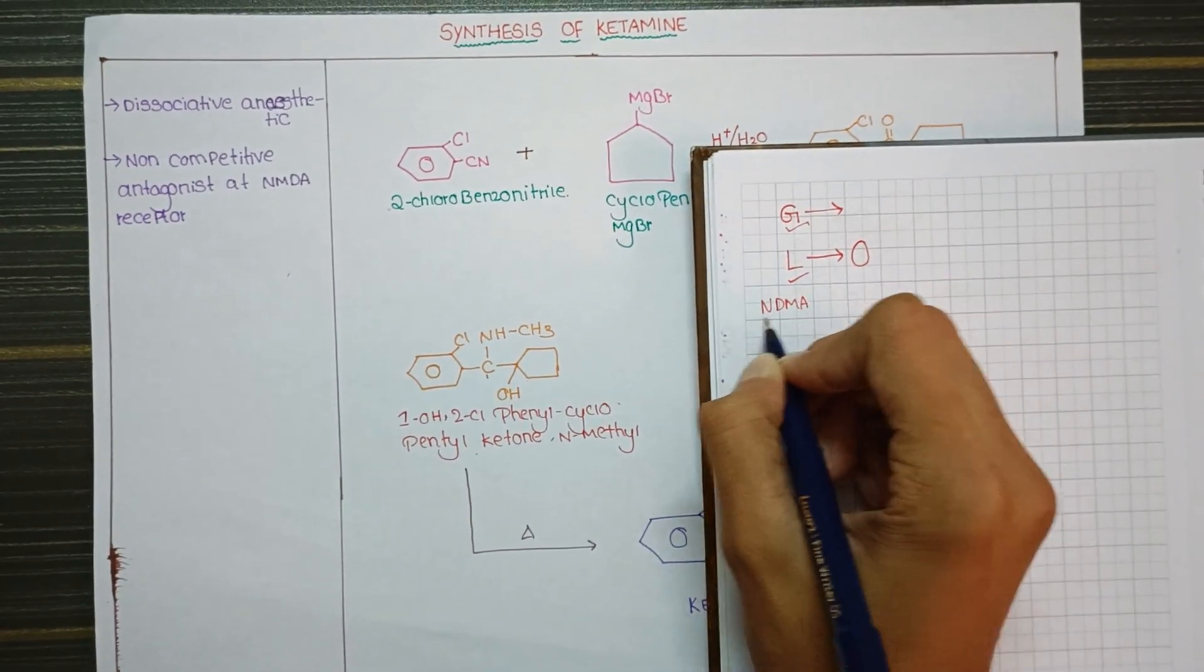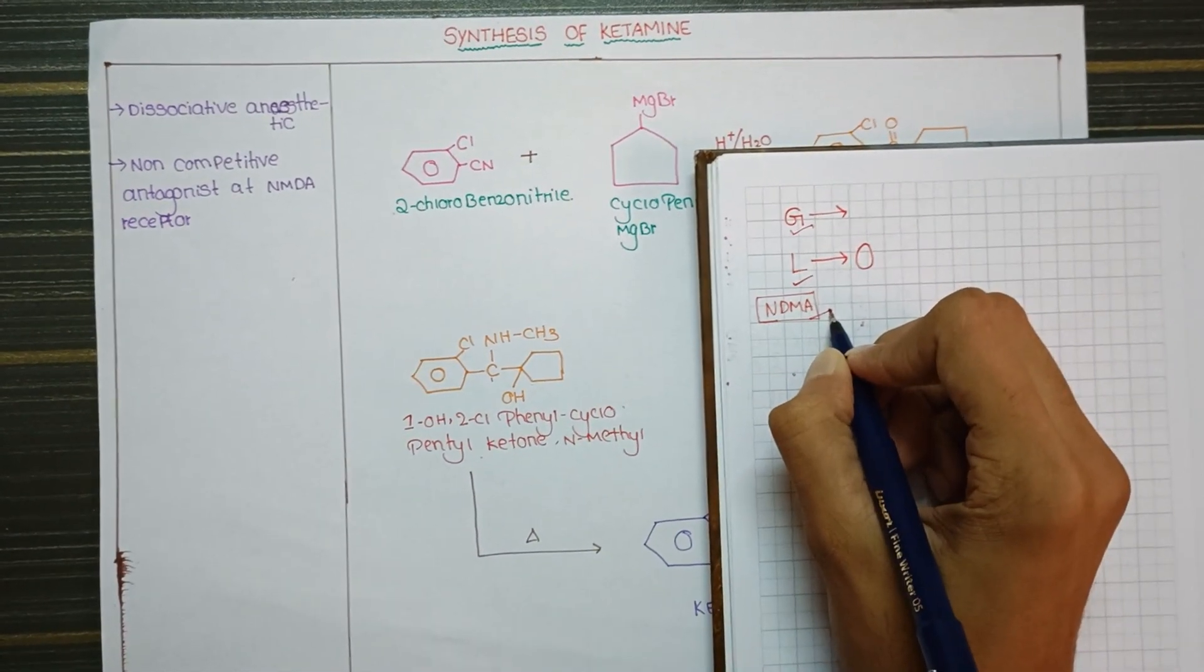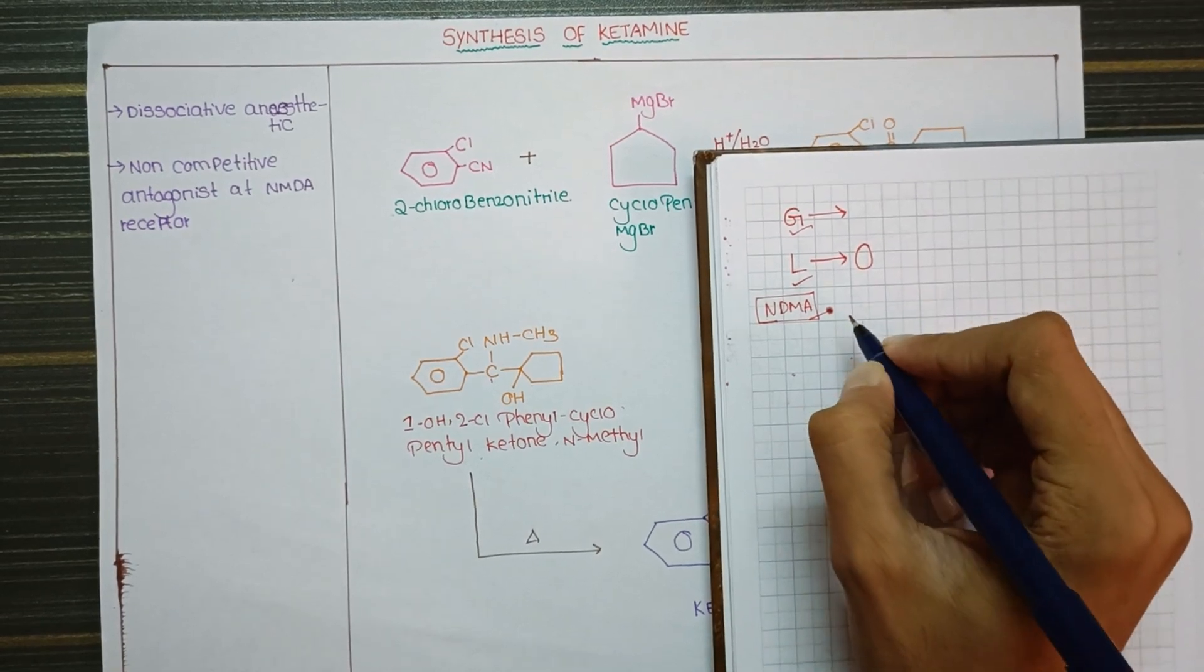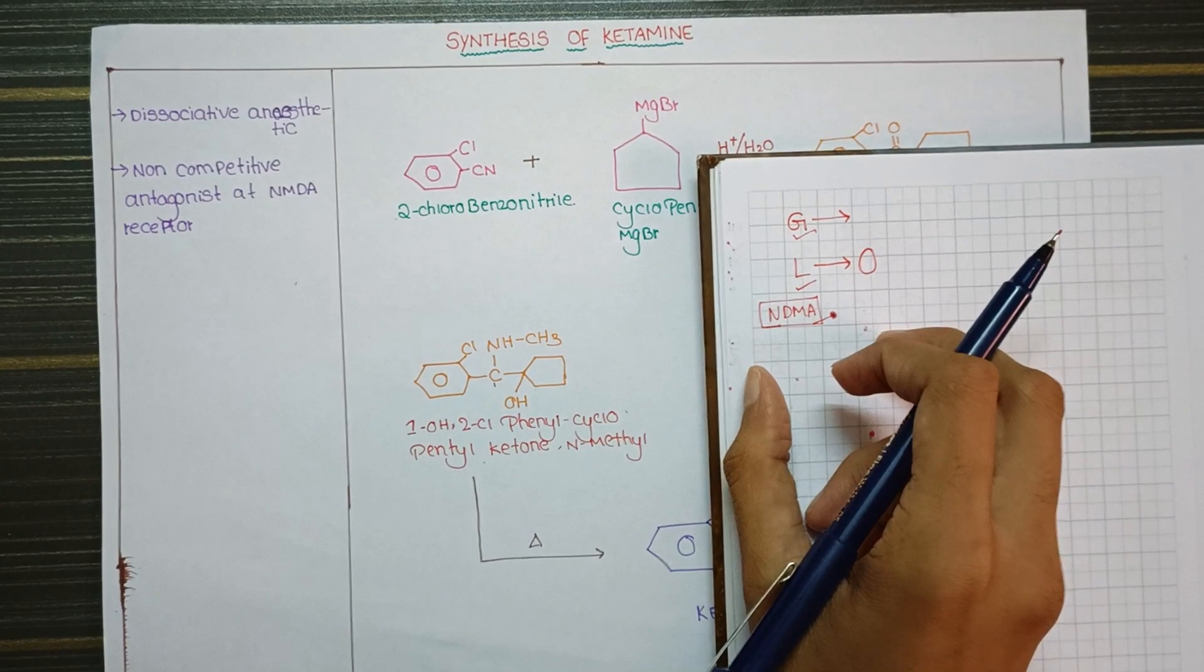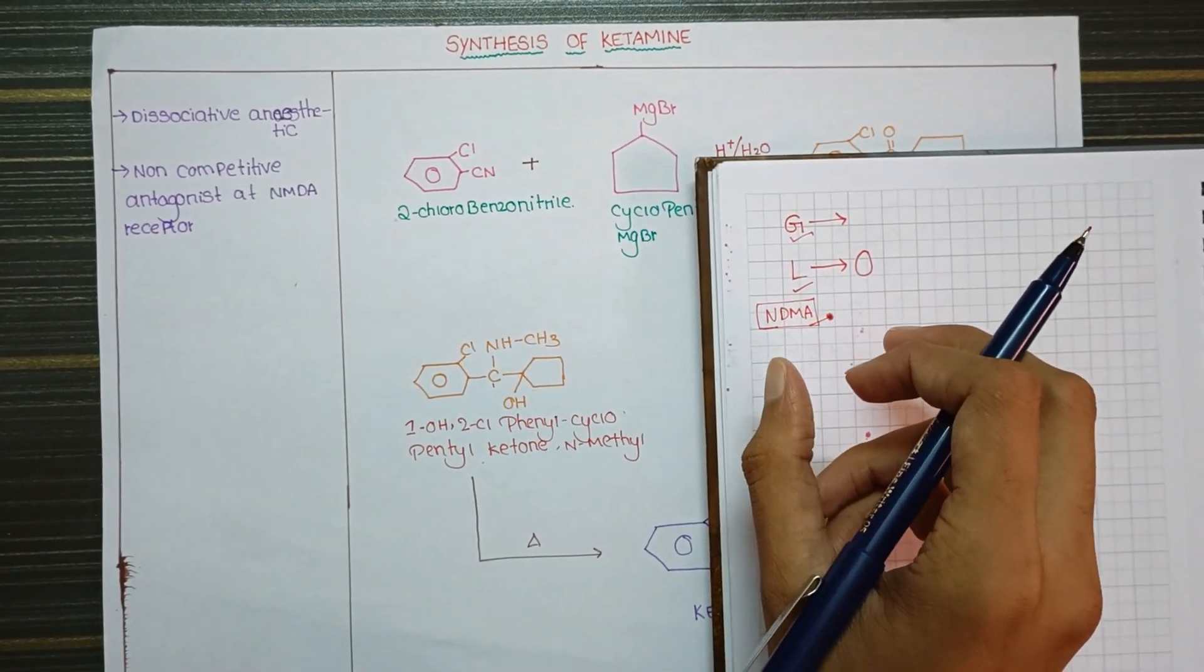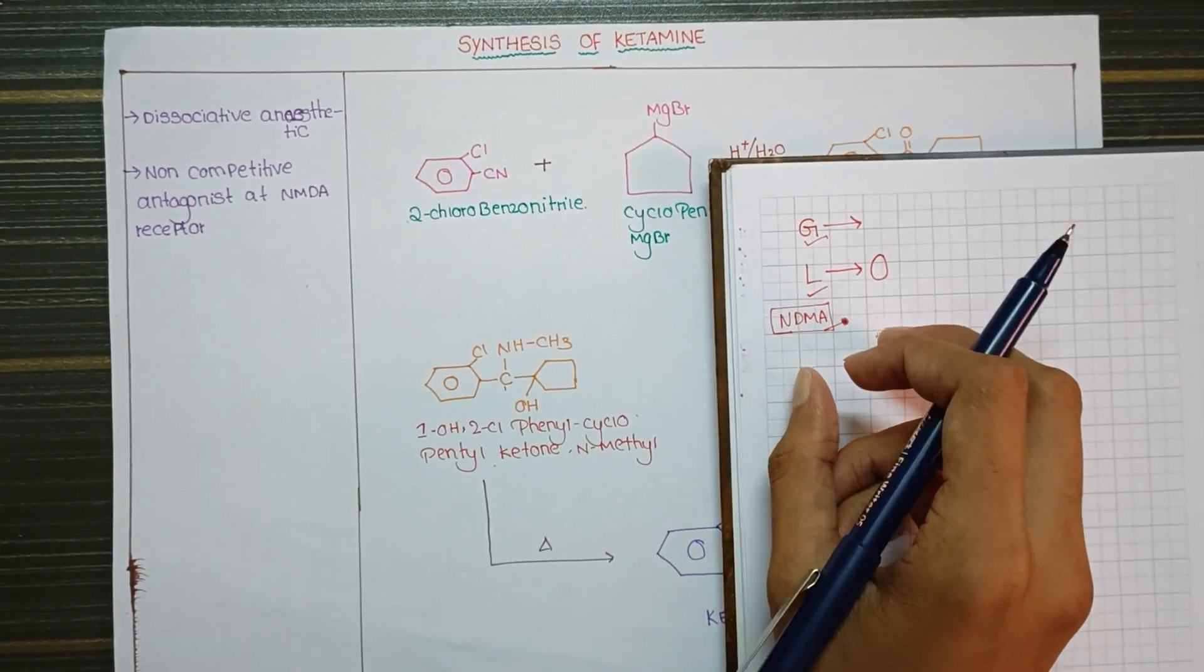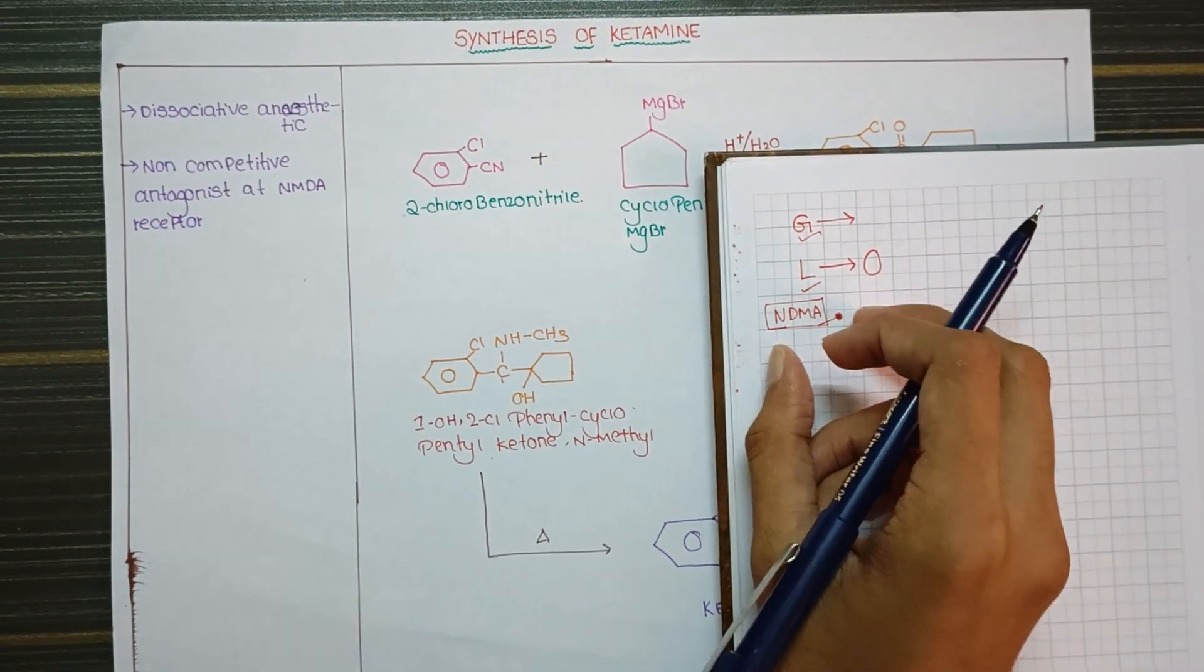NMDA receptors are responsible for the hyperactivity of the brain. When we inject the patient with ketamine, it blocks the NMDA receptors, which blocks the hyperactivity and causes sedation. This is the main mechanism behind that.